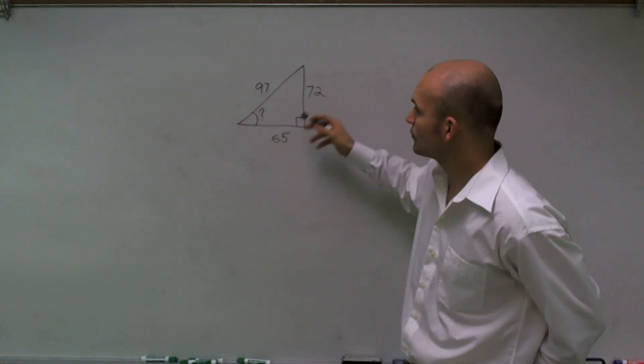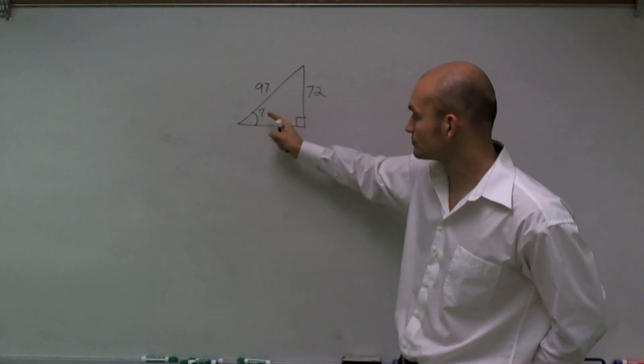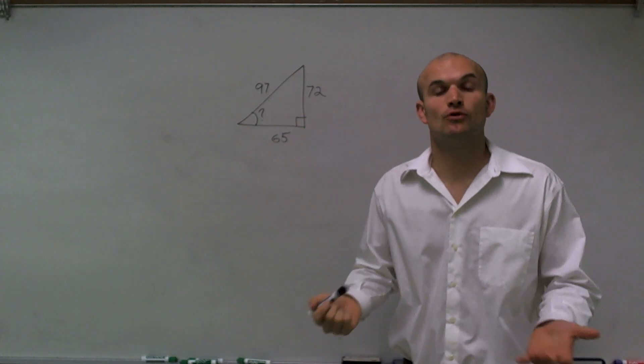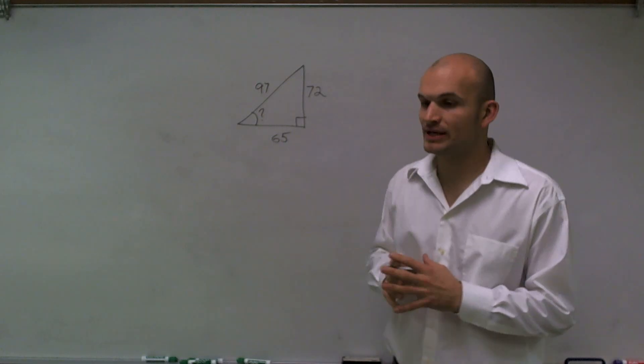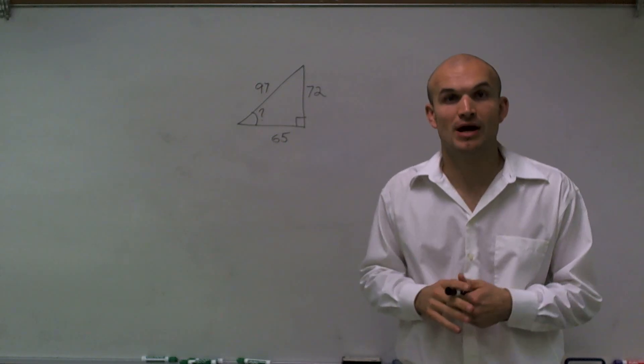What we see here is we have three side lengths and we also have an angle that is a right angle. Once we have a right angle, we can also use our trigonometric properties.